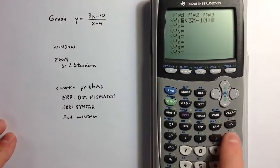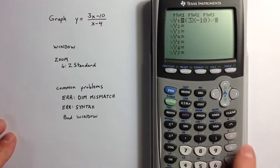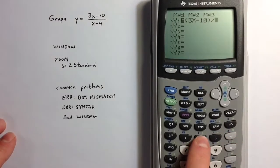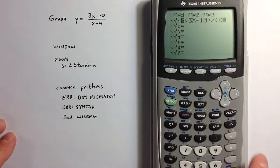Closing the parentheses and hitting the division key. I can then open a new parentheses and type in x minus 4.